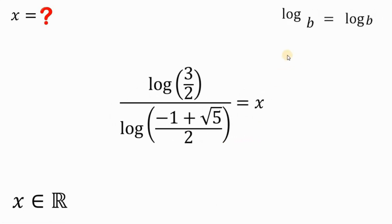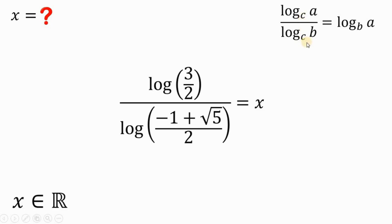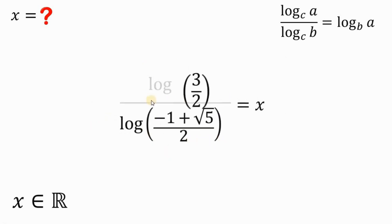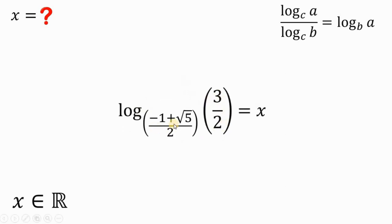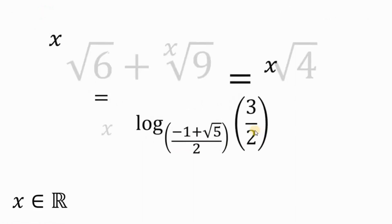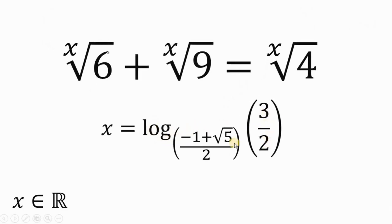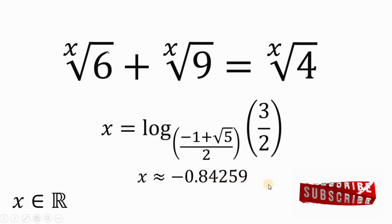Let's recall the change-of-base identity: logarithm of a in base c over logarithm of b in base c, with the same base, can be written as logarithm of a in base b. Since our logarithms are both in base 10, they have the same base. Therefore, the left-hand side can be written as logarithm of 3 over 2 to the base of negative 1 plus square root of 5 over 2. So the value of x is logarithm of 3 over 2 to the base of negative 1 plus square root of 5 over 2, which is approximately equal to negative 0.84259.